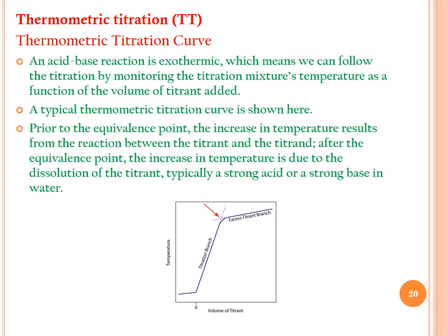As a result of TT we obtain a thermometric titration curve. From the graphical explanation, the curve shows a titration branch and an excess-titrant branch; the tangent lines drawn between these two straight portions, and the intersection point of these tangents, is the endpoint or equivalence point. Since an acid-base reaction is exothermic, we can follow the titration by monitoring the temperature of the mixture as a function of volume of titrant added. Prior to the equivalence point, temperature rises from the reaction between titrant and titrand; after the equivalence point, the temperature rise is due to dissolution of excess strong acid or strong base in water.